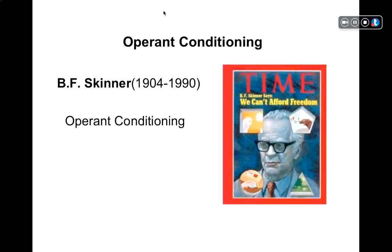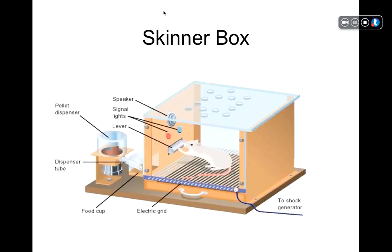B.F. Skinner was a Harvard man. He was a genius in that he was able to come up with creative ideas and theories about basic aspects of human behavior. He explained human behavior through simple, basic laws of conditioning and learning, and came up with his own brand of conditioning known as operant conditioning.